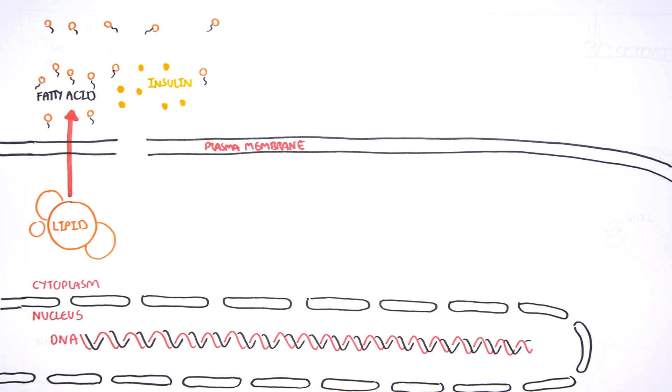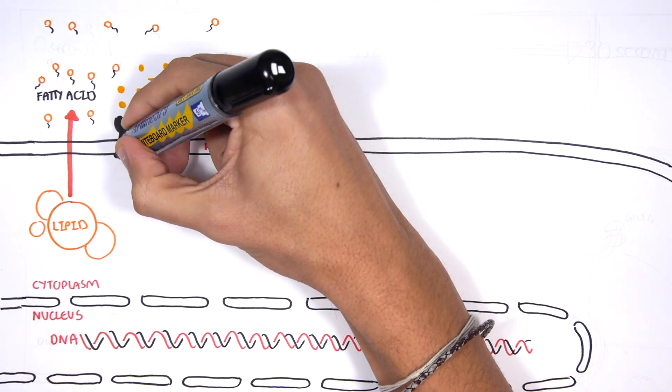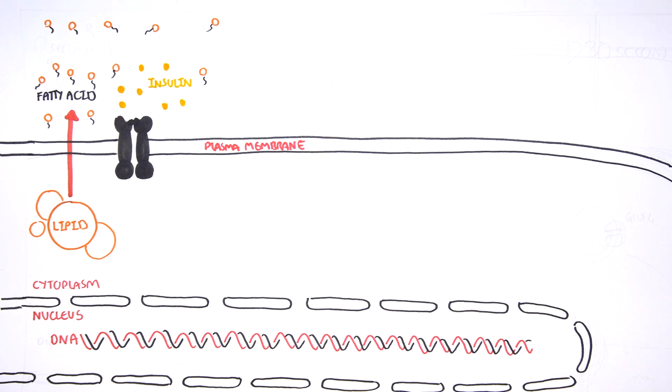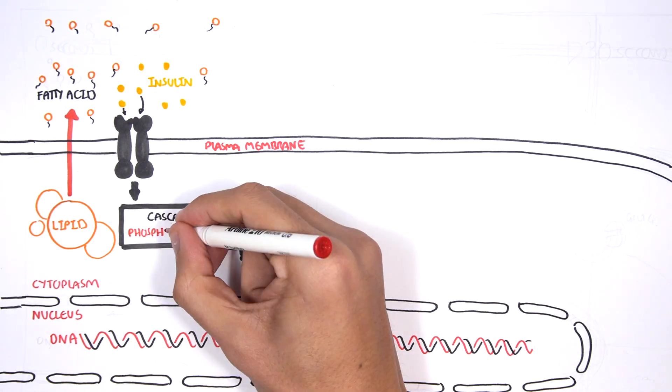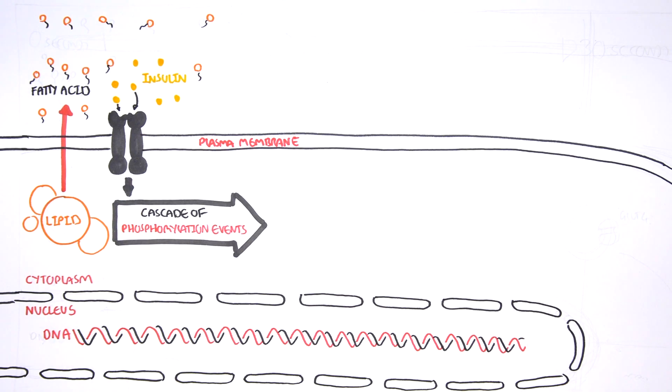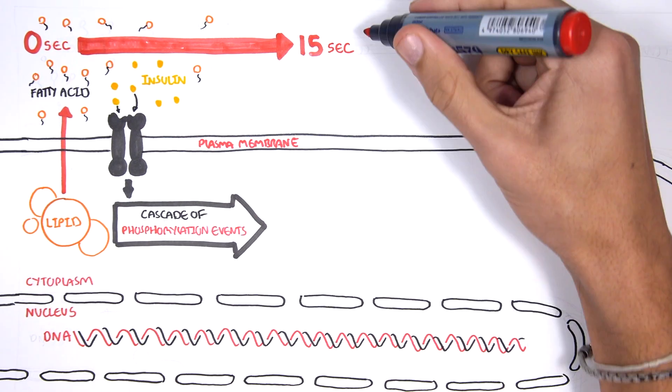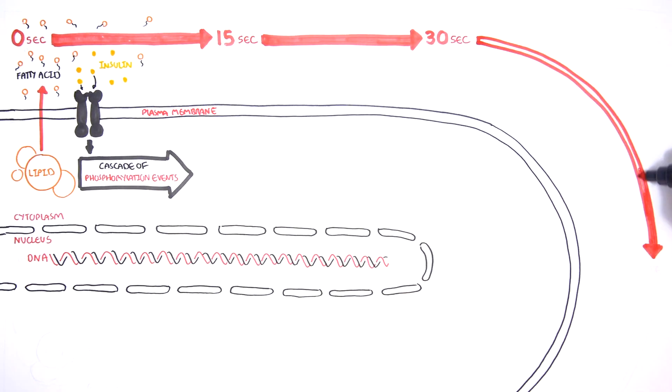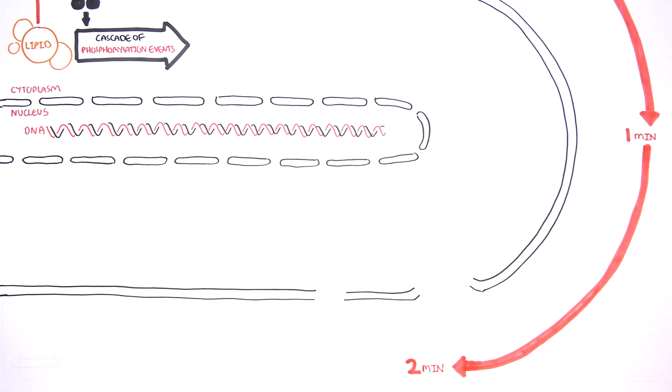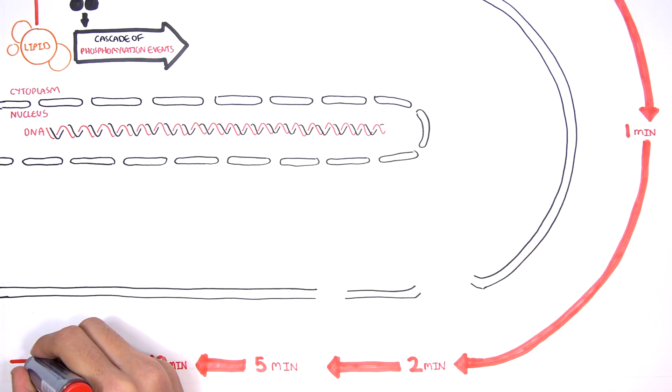After a meal, insulin is released and binds to insulin receptors on fat cells. This triggers a cascade of phosphorylation events inside the cell that leads to a number of outcomes occurring at different times. Here, we will look at a time frame from 0 seconds to 20 minutes following the binding of insulin to the insulin receptor.